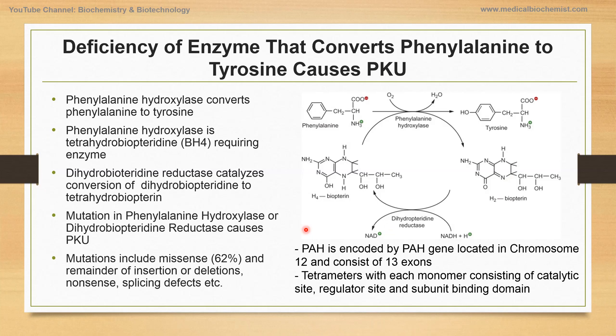Therefore, mutation in phenylalanine hydroxylase or dihydrobiopterin reductase blocks the conversion of phenylalanine to tyrosine and causes accumulation of phenylalanine in the blood. The mutations are generally missense; the remainder are insertions, deletions, nonsense, or splice defects.